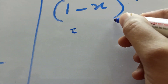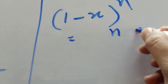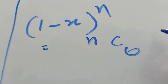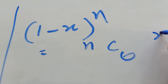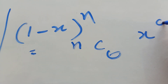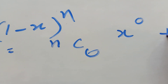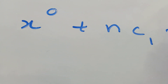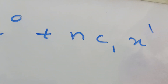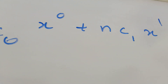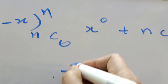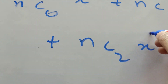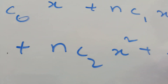Now using the (1 minus x) whole power n expansion: write nC0 x power 0, plus nC1 x power 1, plus nC2 x square, plus and so on.